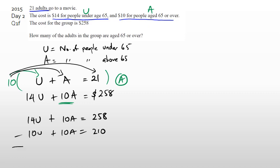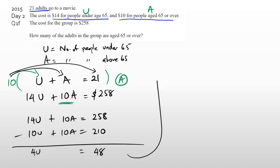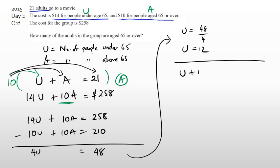Subtracting gives 4U equals 48, so U equals 48 divided by 4, which is 12. But the question asks how many adults are age 65 or over, so we need to find A. Substituting back: 12 plus A equals 21, so A equals 9. There are 9 people in the group aged over 65.